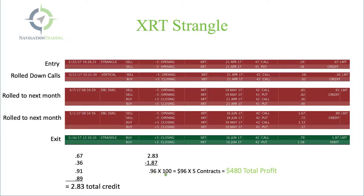Multiply that by 100 because each contract controls 100 shares. That gives us a profit of $96 per contract times five contracts, giving us a total profit of $480. The point of this is showing you how to calculate profits. After your rolls and adjustments, you need to add up the credits — and this is on a strangle specifically. You add up the credits, then you subtract any debits or what you bought it back for, and that will give you your total profit. Then you multiply that by the number of contracts, and that gives you the dollar amount you won total on the trade.